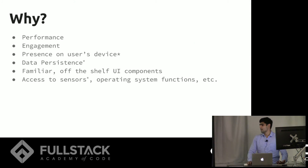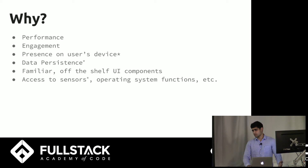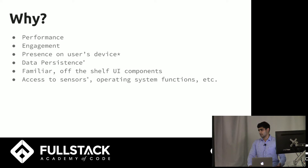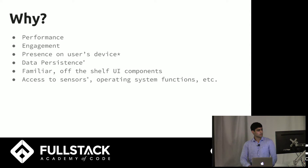So why do you want to make a native app? A couple of reasons are performance — something like games where every frame counts, or even apps like Flipboard that found the document object model isn't fast enough sometimes. Users tend to spend more time with apps. You have a presence on their homepage. You have persistent data. And you have these familiar off-the-shelf UI components that hook in well with system functions like accessibility — that's all done for you.